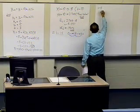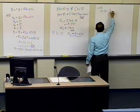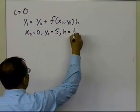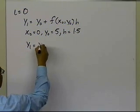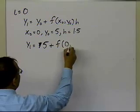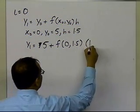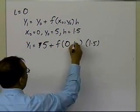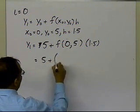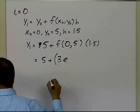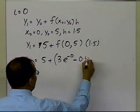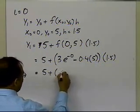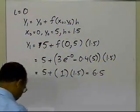With i equal to 0, y1 equals y0 plus f(x0, y0) times h, where y0 is 5 and h is now 1.5. So y1 equals 5 plus the value of the function at (0, 5) times 1.5. The function value at x0 equals 0 and y0 equals 5 is 3e to the power minus 0 minus 0.4 times 5, which is 1. So y1 equals 5 plus 1 times 1.5, which turns out to be 6.5.